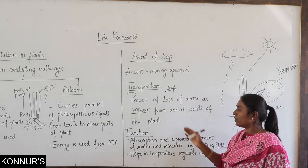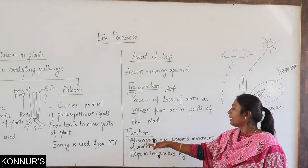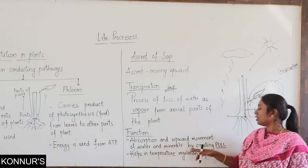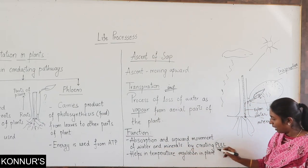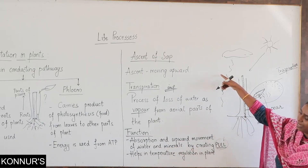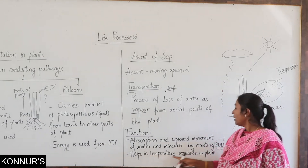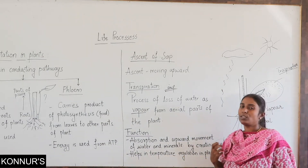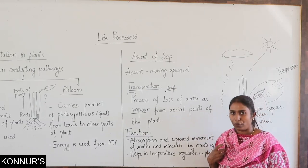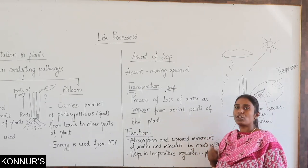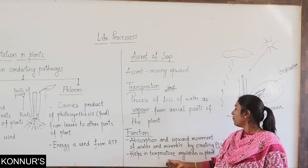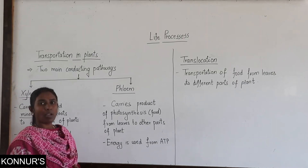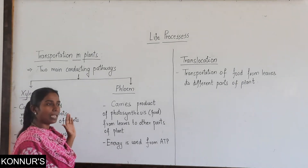Transpiration is a very important topic. The process of loss of water in the form of vapor from aerial parts of the plant is called transpiration. What are the functions? It assists absorption and upward movement of water and minerals by creating a pull — this creating a pull is ascent of sap. It also helps in temperature regulation in plants, just as blood helps in temperature regulation in humans.